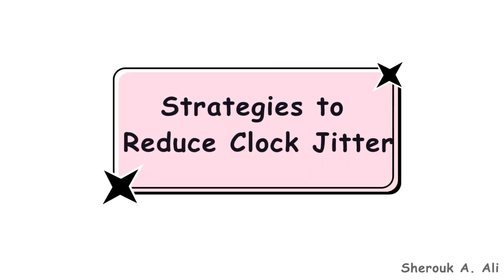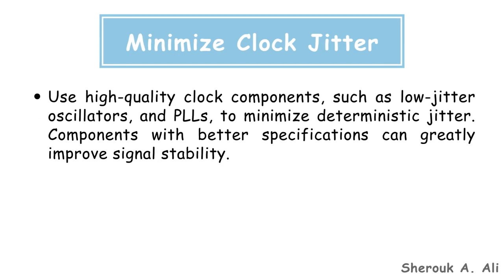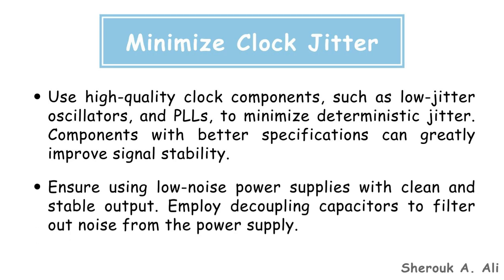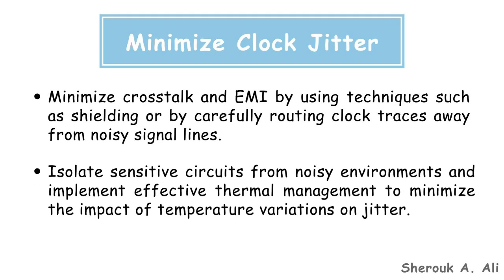Now let's explore strategies to reduce clock jitter. To minimize clock jitter, here are some methods that can help. Use high-quality clock components such as low-jitter oscillators and PLLs to minimize deterministic jitter, as components with better specifications can greatly improve signal stability. Ensure using low-noise power supplies with clean and stable output, and employ decoupling capacitors to filter out power supply noise. Minimize crosstalk and electromagnetic interference using techniques such as shielding or by carefully routing clock traces away from noisy signal lines. Isolate sensitive circuits from noisy environments and implement effective thermal management to minimize the impact of temperature variations on jitter.